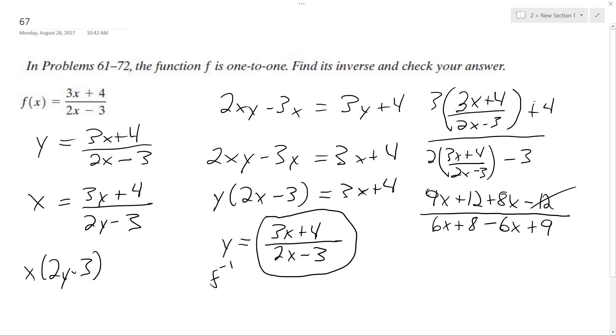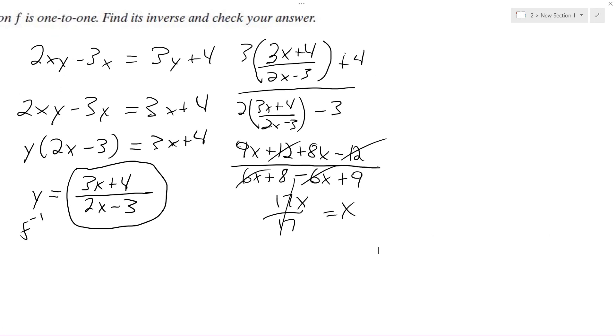The 12s cancel out here, the x's cancel out, so we're left with 17x over 17. Reduce down to x, which proves that this is the inverse. All right, so that's it.